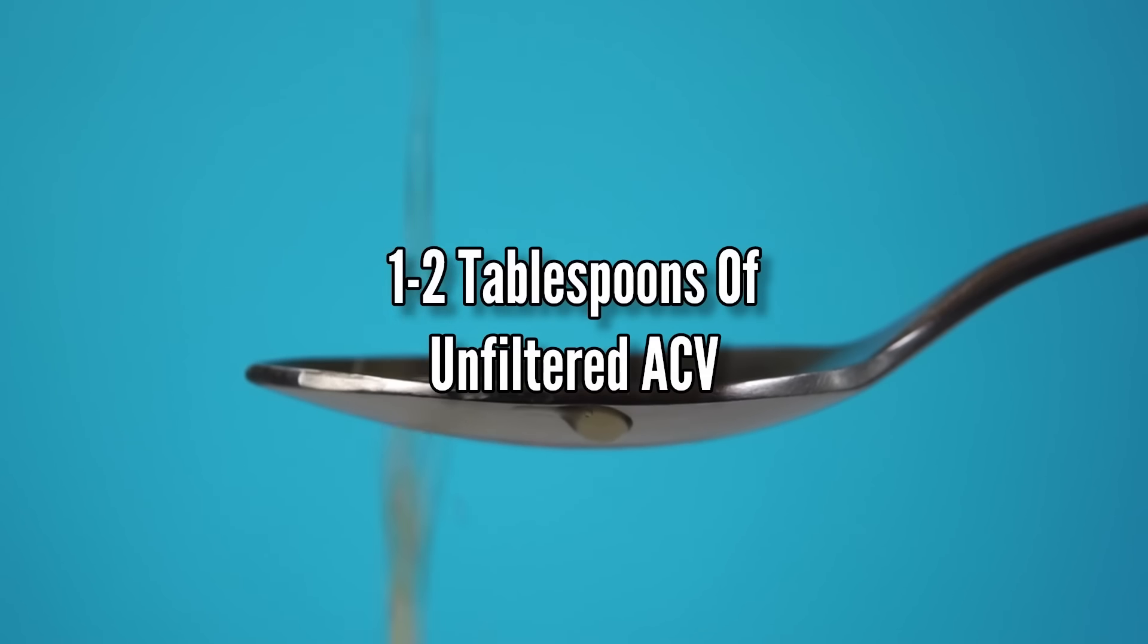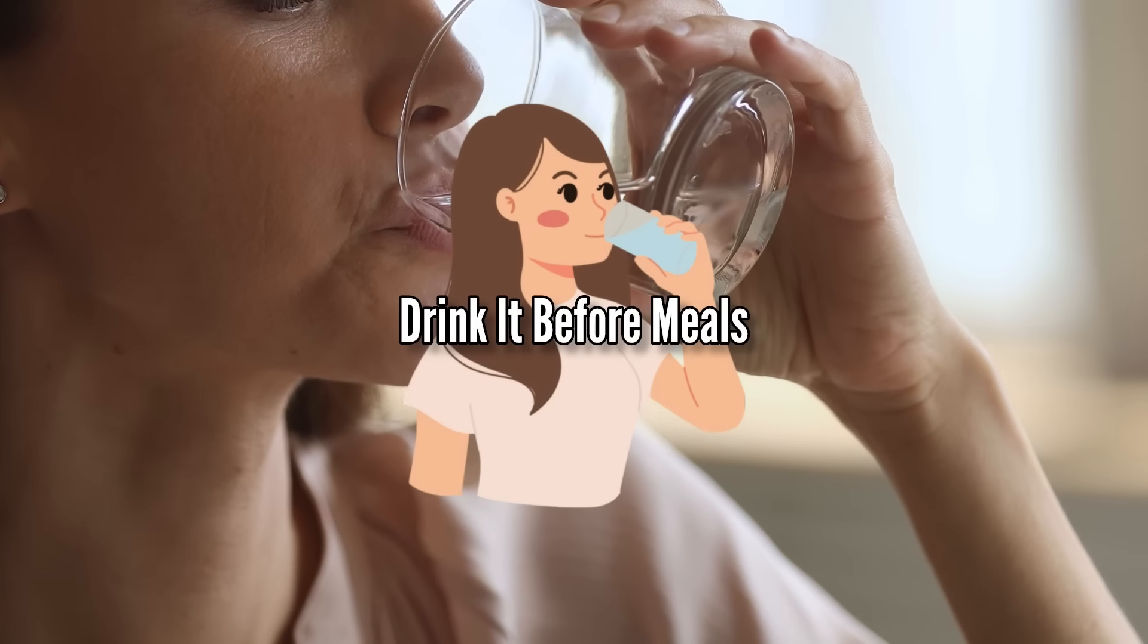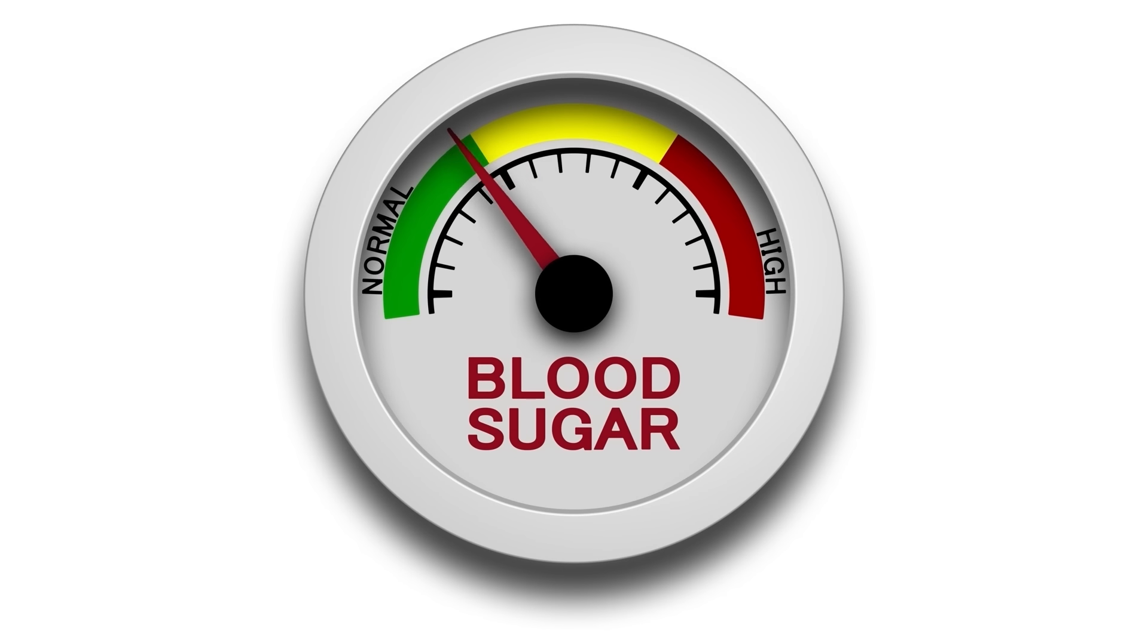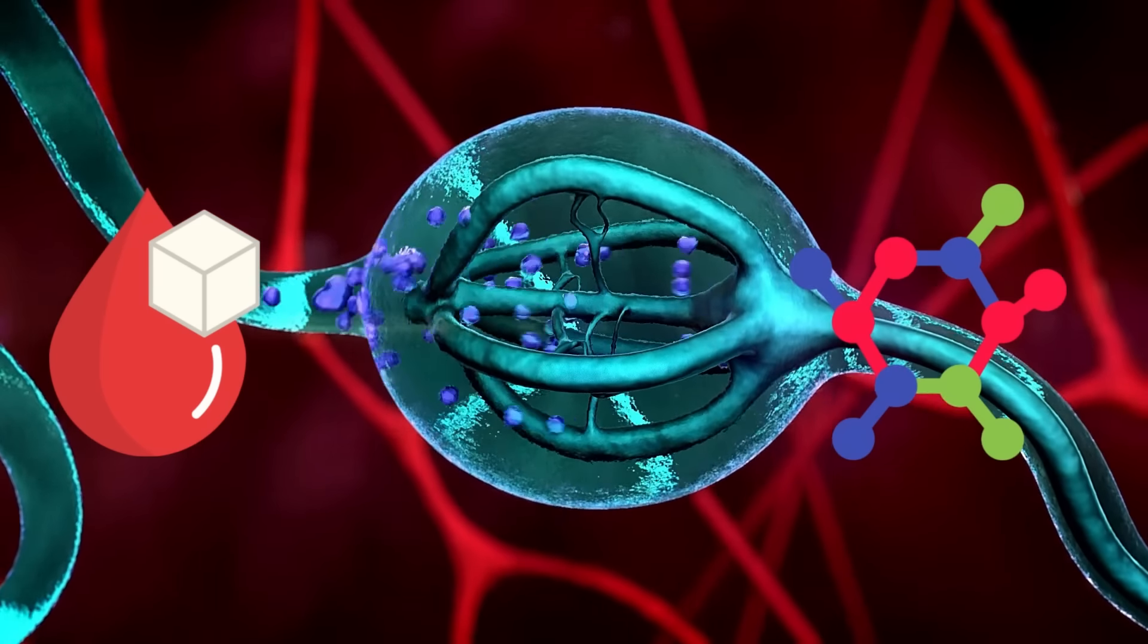All you need to do is take 1 to 2 tablespoons of unfiltered ACV and dilute it in a glass of water. Drink it before meals, 2 to 3 times a day. This drink can help you lower your blood sugar levels and can even make your body respond better to insulin.